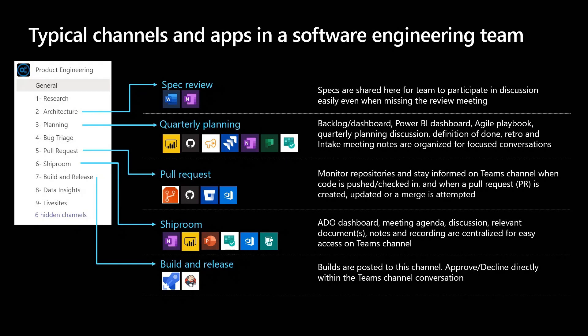When stuff has been built, you can have a pull request channel and set up connectors so they post into the channel when a new pull request is created. You can set up Azure Repos, GitHub, and Azure DevOps to post into the channel for the same thing. The idea is anything your team needs is there in Teams for you.